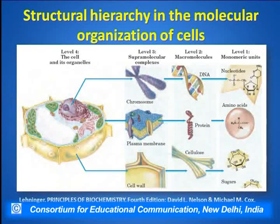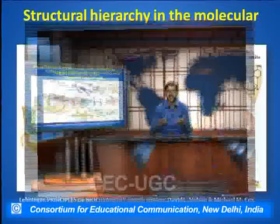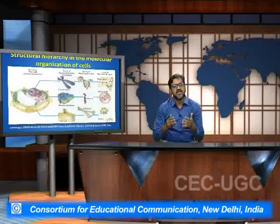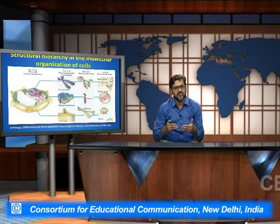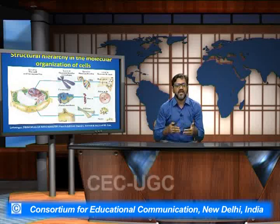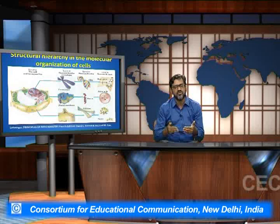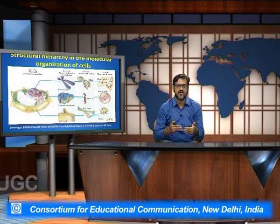Subsequently, they combine to get into the level 2, which is the macromolecule level. These nucleotides base pair with one another to form the DNA level. DNA is deoxyribonucleic acid. These amino acids, with the help of peptide linkages, form into protein structures, while the sugar molecules combine to form cellulose and various glycogen molecules.